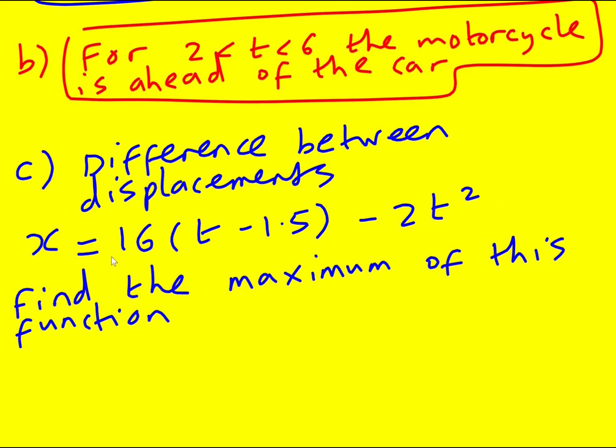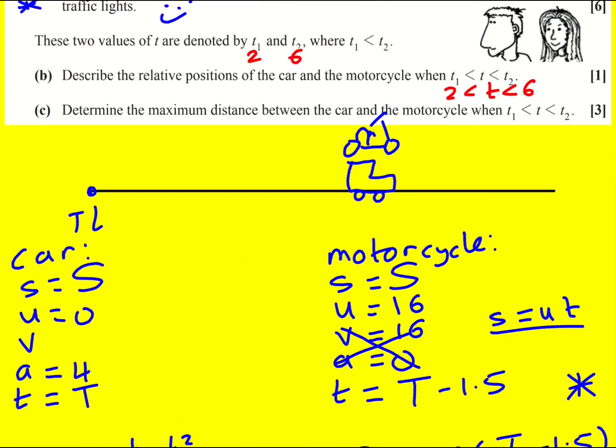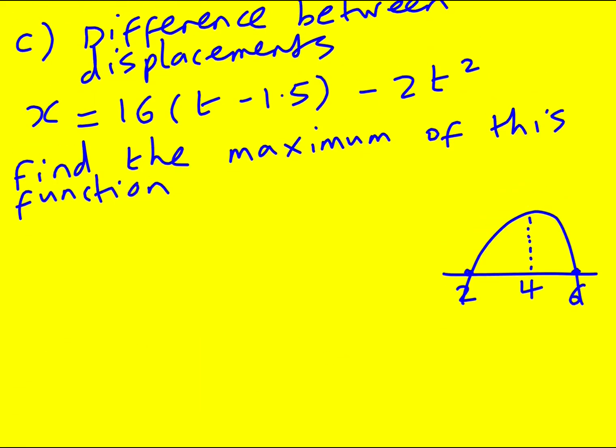Earlier we set them equal to one another and found out that t was 2 and t was 6. So when t is 2, this is going to be 0. And when t is 6, this is going to be 0. And so we need to find the maximum. Now actually, I've just given quite a big hint because you might have seen this. When you have two roots, the maximum, and this is a negative quadratic, so that's what it's going to look like, is always exactly halfway between the two times. So it's going to be when t occurs, when t equals 4.